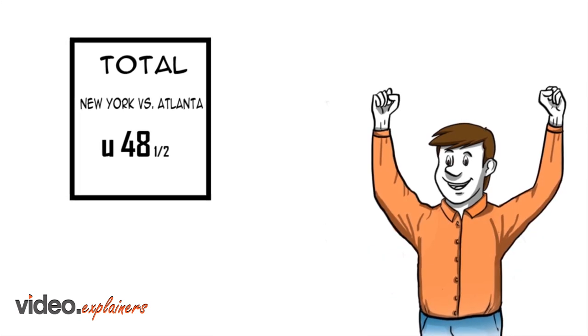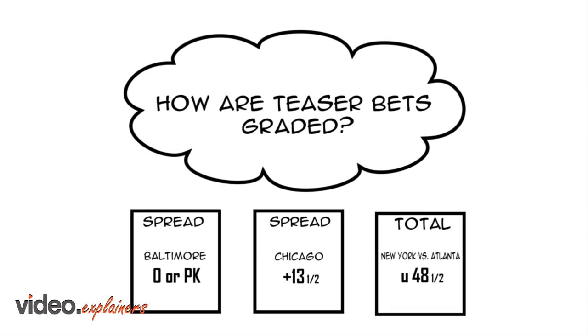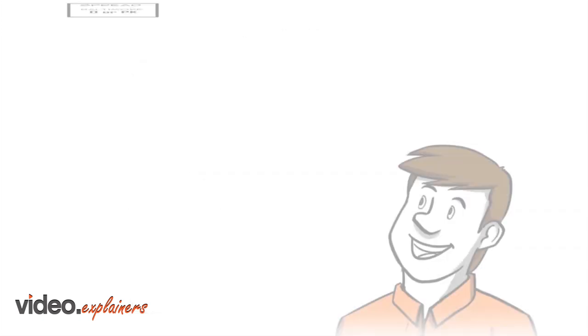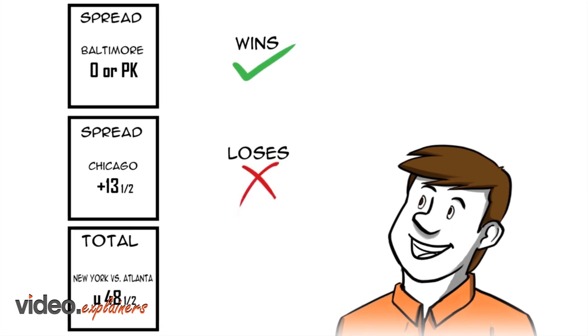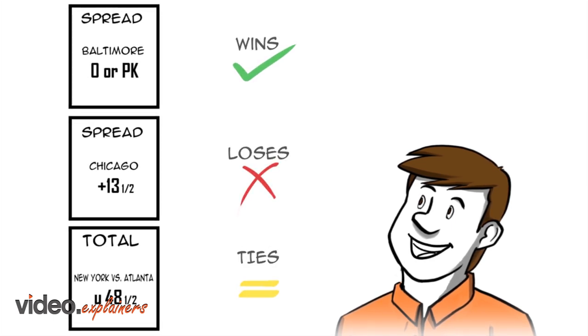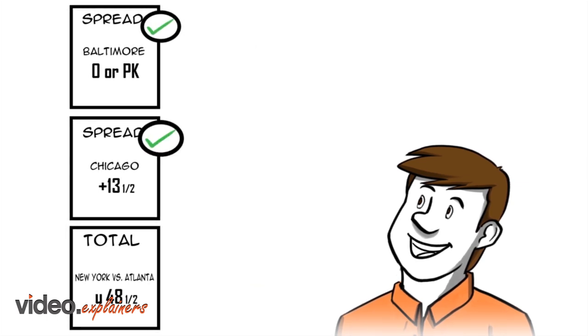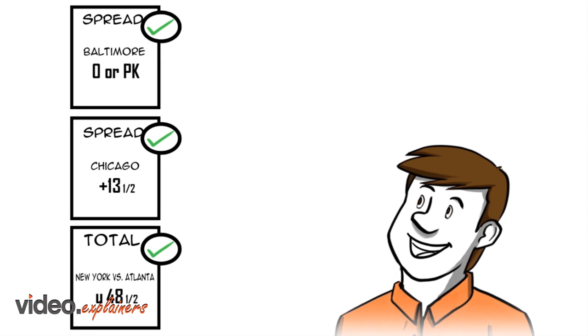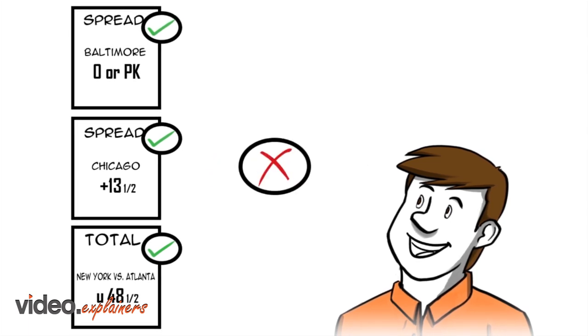How are teaser bets graded? Each spread or total wins, loses, or ties according to each game's outcome. The teaser wins if all selections win. Some sportsbooks grade ties as wins. The teaser loses if any selection loses. Some sportsbooks grade ties as losses.